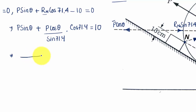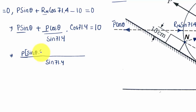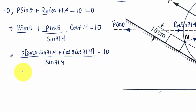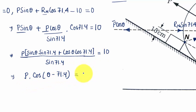Taking the LCM as sin71.4, we get P times (sinθ · sin71.4 + cosθ · cos71.4) over sin71.4 equals 10. This is the well-known trigonometric identity: cos A cos B + sin A sin B = cos(A − B). So the numerator becomes P · cos(θ − 71.4).